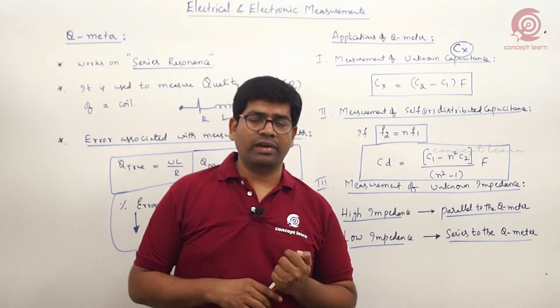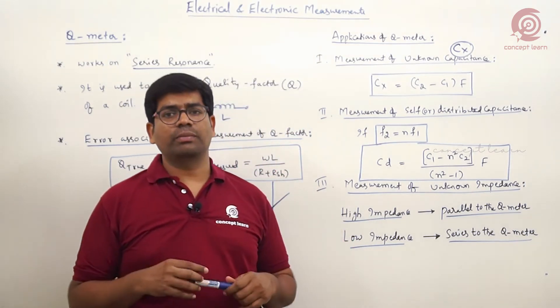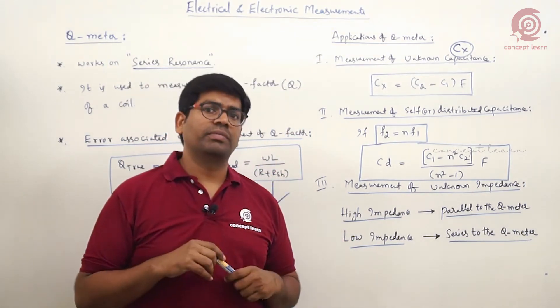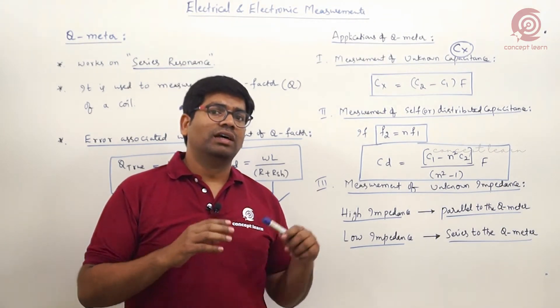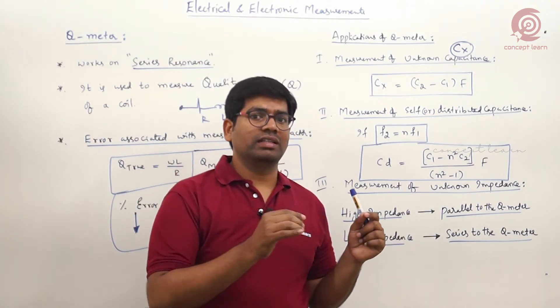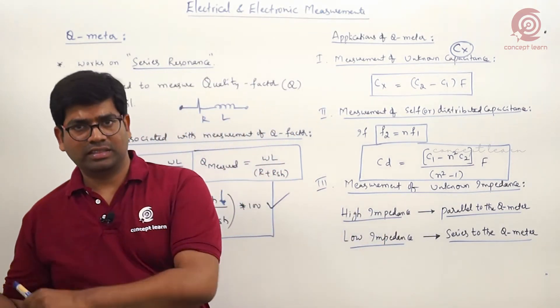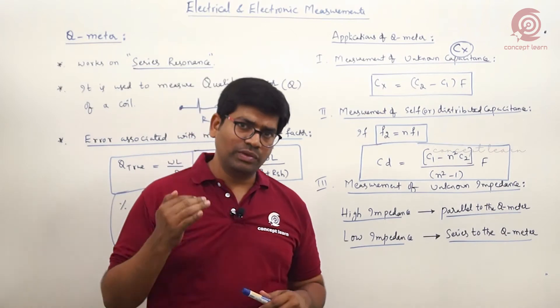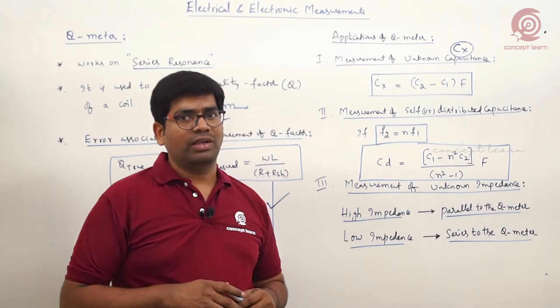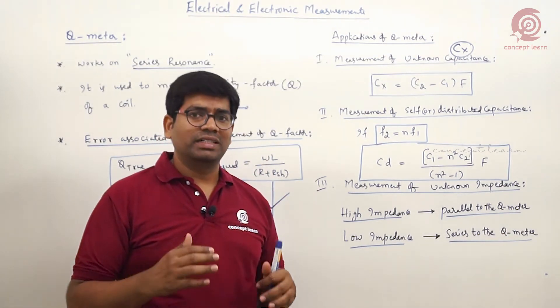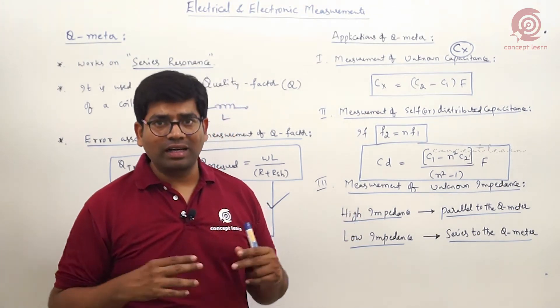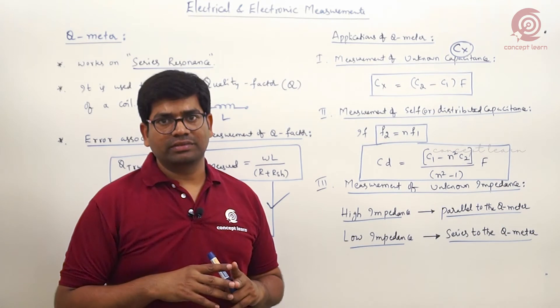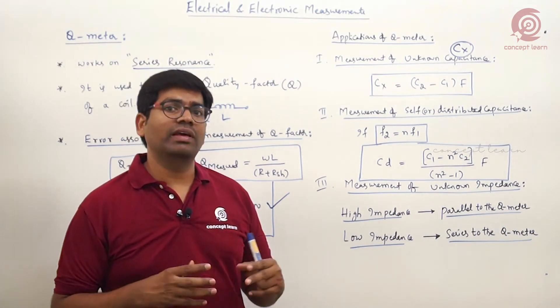RLC components, if you look into network theory or circuit theory point of view, are lumped in nature. Lumped in nature means concentrated to a particular portion, where you can clearly separate R, L, C. This is possible only under low frequency. But at high frequencies, RLC components are distributed in nature. We cannot separate them.